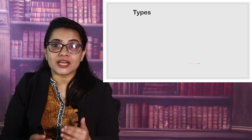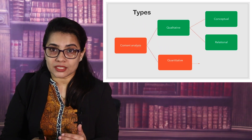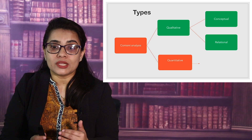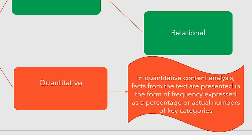That is why content analysis is very widely used in mass communication and psychological studies. Content analysis broadly has two types: qualitative and quantitative. Quantitative content analysis focuses on facts from the text that are presented in the form of frequency, expressed as a percentage or actual number of key categories. It basically focuses on quantifying the number of words and other text elements.